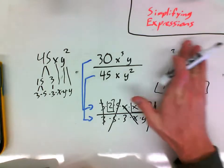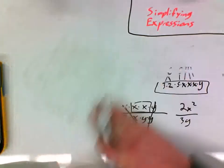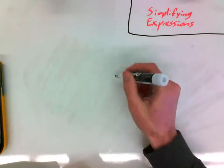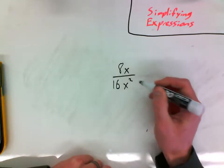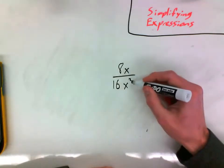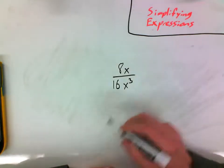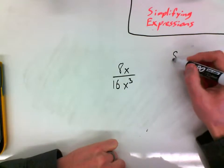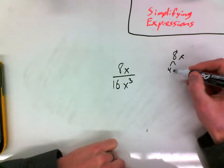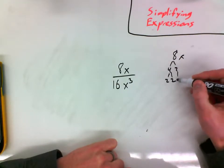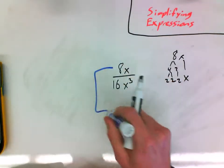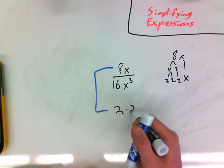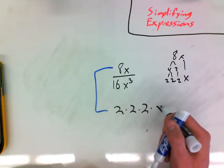Now where this could come in to give you some issues is if you had something like this. Let's just say we had 8x over 16x cubed. This is a really common mistake. So people will break down the 8x. That's 4 times 2, which is 2 times 2 times 2 times x.